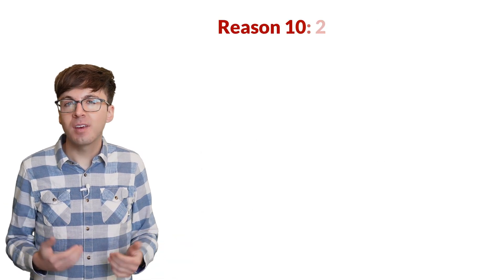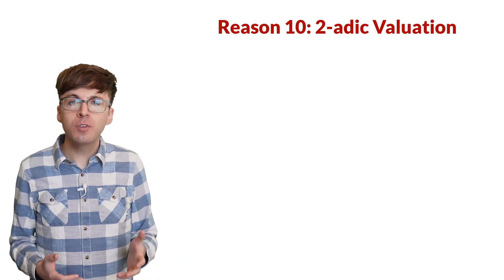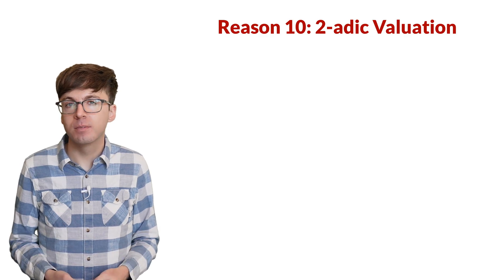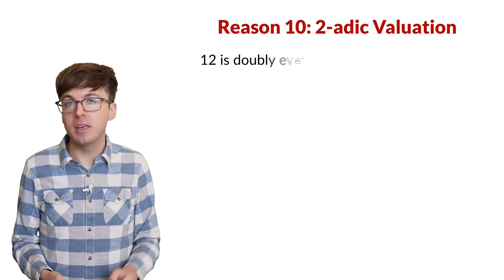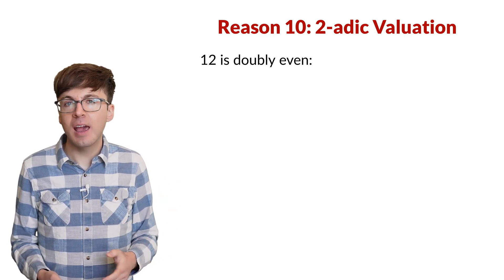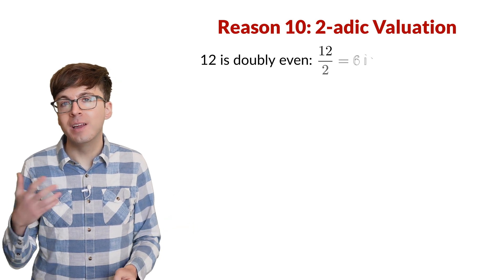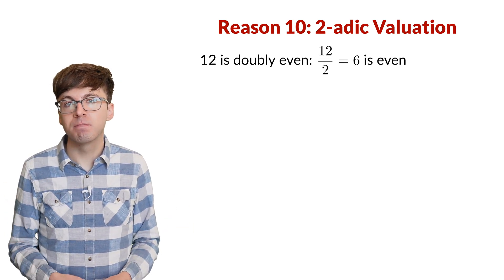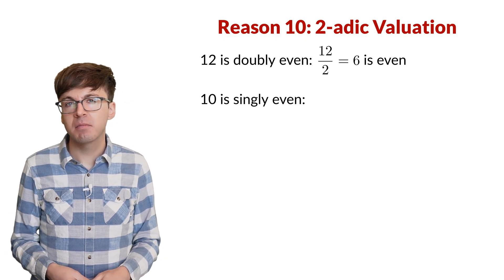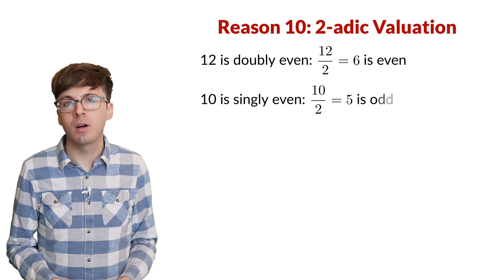Reason 10. We can think that some integers are more even than others. Like 12 is doubly even. 12 is even, and when we divide 12 by 2, we get 6, which is still even. 10 is only singly even. After we divide by 2, we get an odd number.